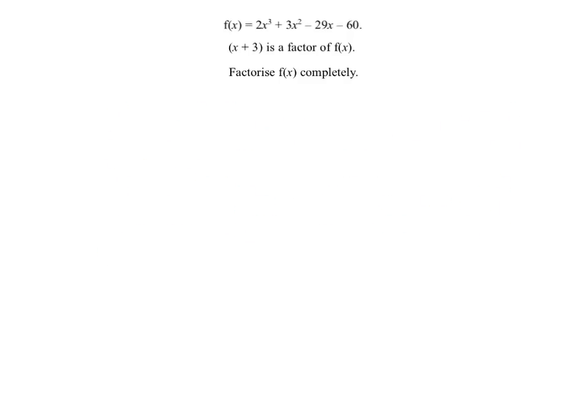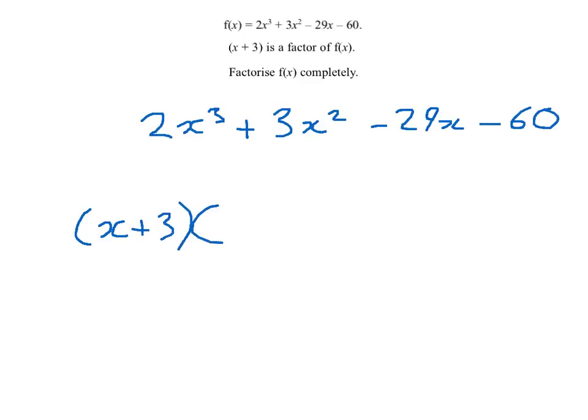So here's my original question. I have a cubic: 2x cubed plus 3x squared minus 29x minus 60. And I'm told that x plus 3 is a factor. So I'm going to have x plus 3, and then I've got to work out the quadratic that it's going to be.